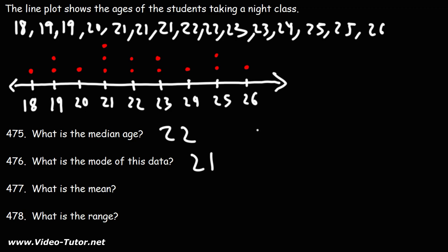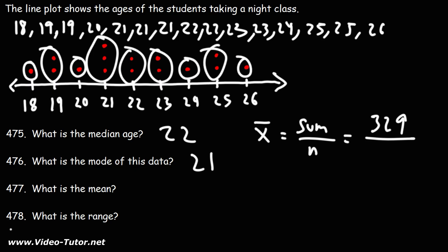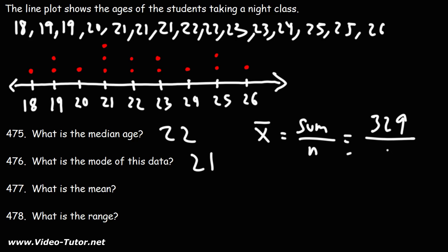What is the mean? To find the mean we need to take the sum and divide it by the number of numbers we have. In your calculator, add 18, then 19 two times, 20, then 21 three times, then 22 two times, then 23 two times, then 24, 25, and 26. The sum is 329. Now divide by n — the number of dots in the data set — which is 15. So 329 divided by 15 gives us 21.93. That's the mean.